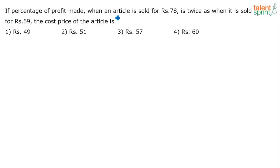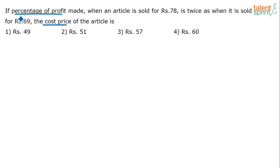If the percentage of profit made when an article is sold for rupees 78 is twice as when it is sold for rupees 69, the cost price of the article is — so basically we have to find out the cost price. The condition given is that the percentage of profit made when sold for rupees 78 is twice compared to the selling price of 69.